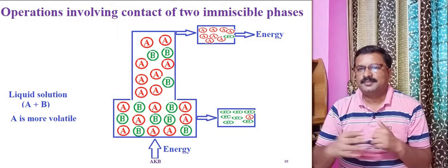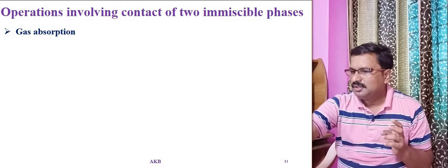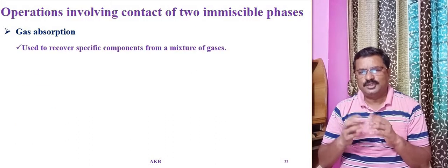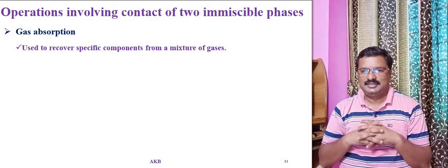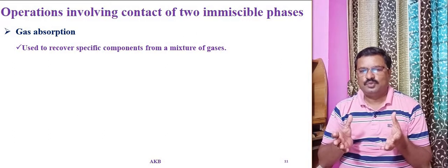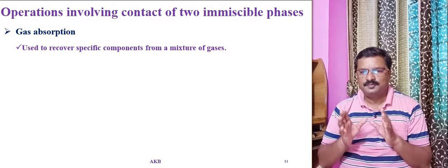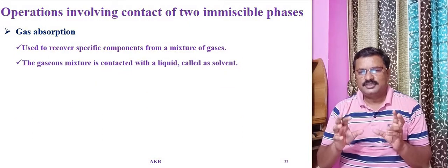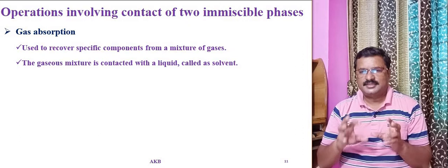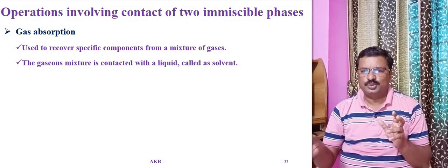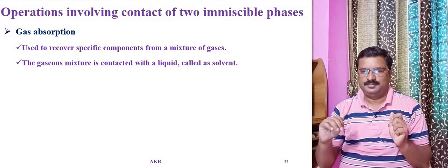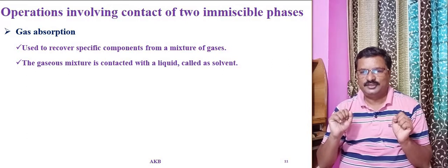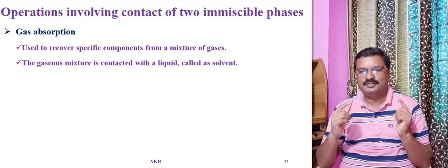The next operation is gas absorption. Gas absorption is used to recover specific components from a mixture of gases. If you want to remove specific components from a gas mixture, you can use gas absorption. The gaseous mixture is contacted with a pure liquid called a solvent. In gas absorption, there is contact of a gas phase with a liquid phase, and both phases are added from outside.